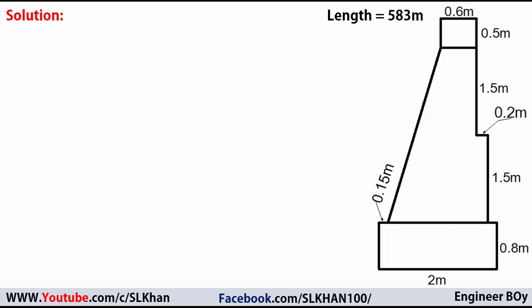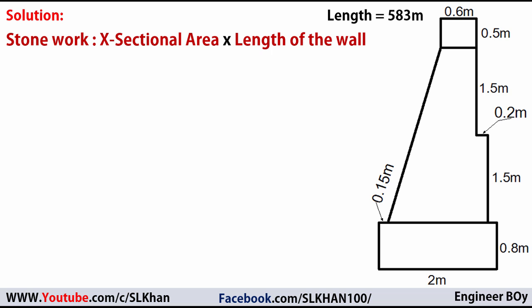In the solution, remember that the cross-sectional area times its length gives us the stonework, or the volume of this retaining wall. The length is given, so the only thing we need to do is calculate the cross-sectional area.